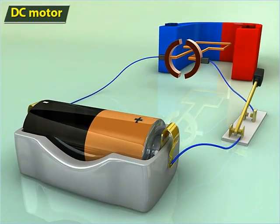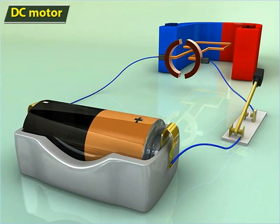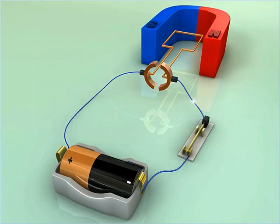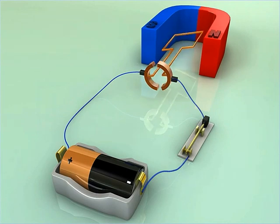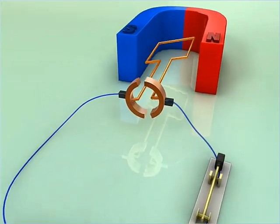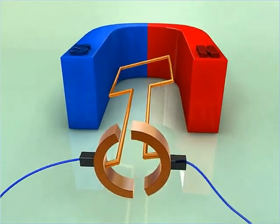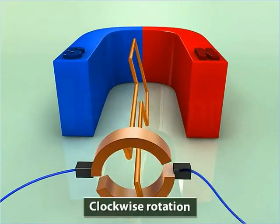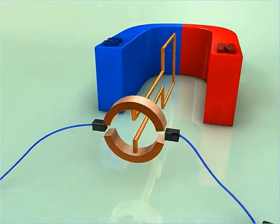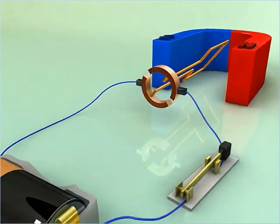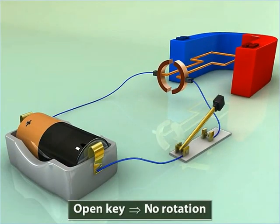As the direction of the direct current changes, the direction of the rotation of the armature also changes. Again, as the key is opened, the armature stops rotating.